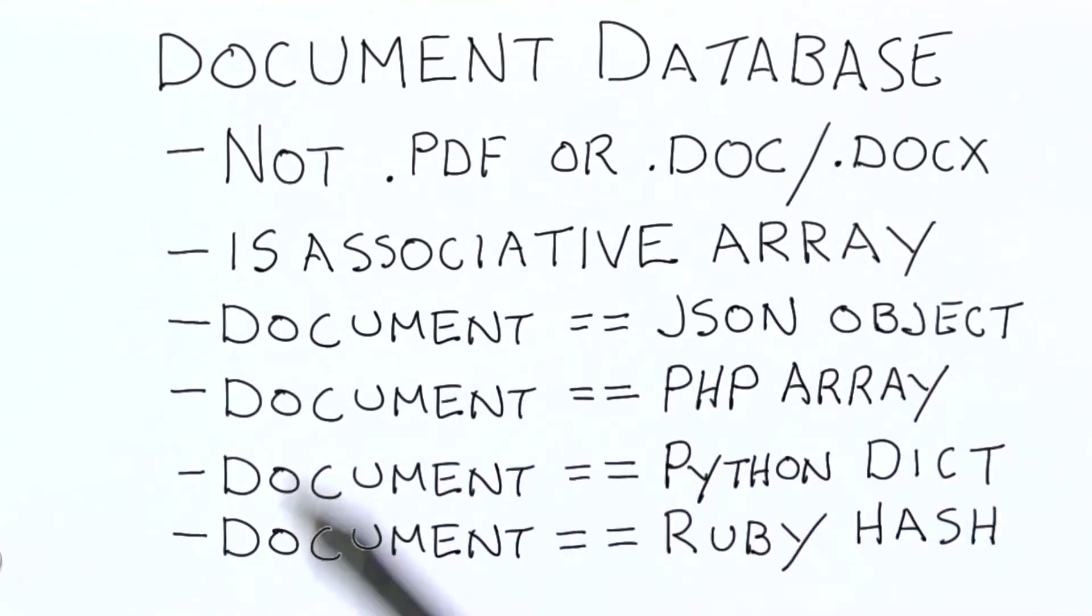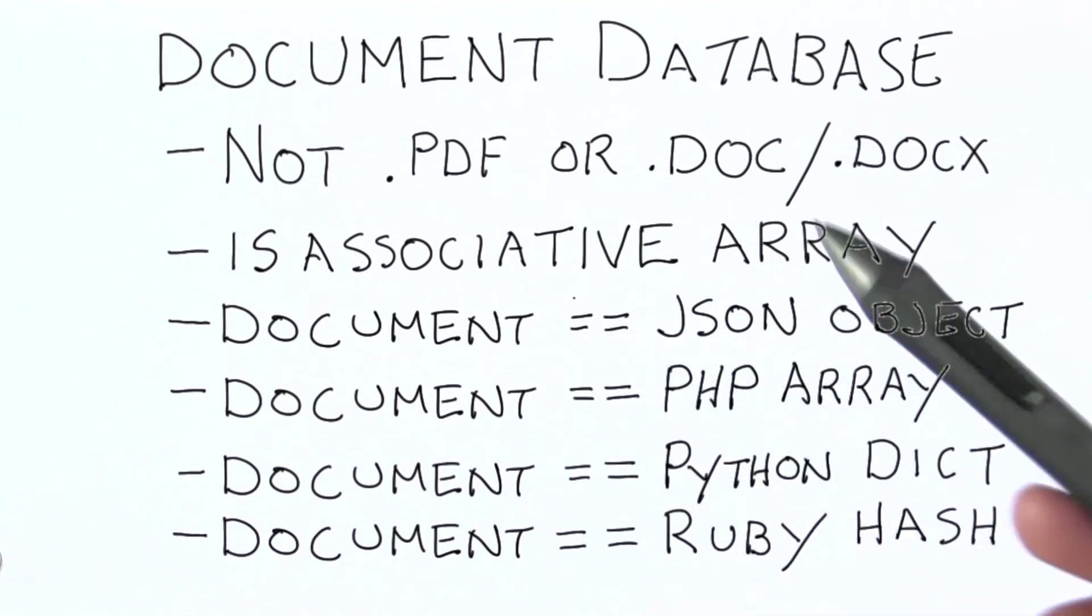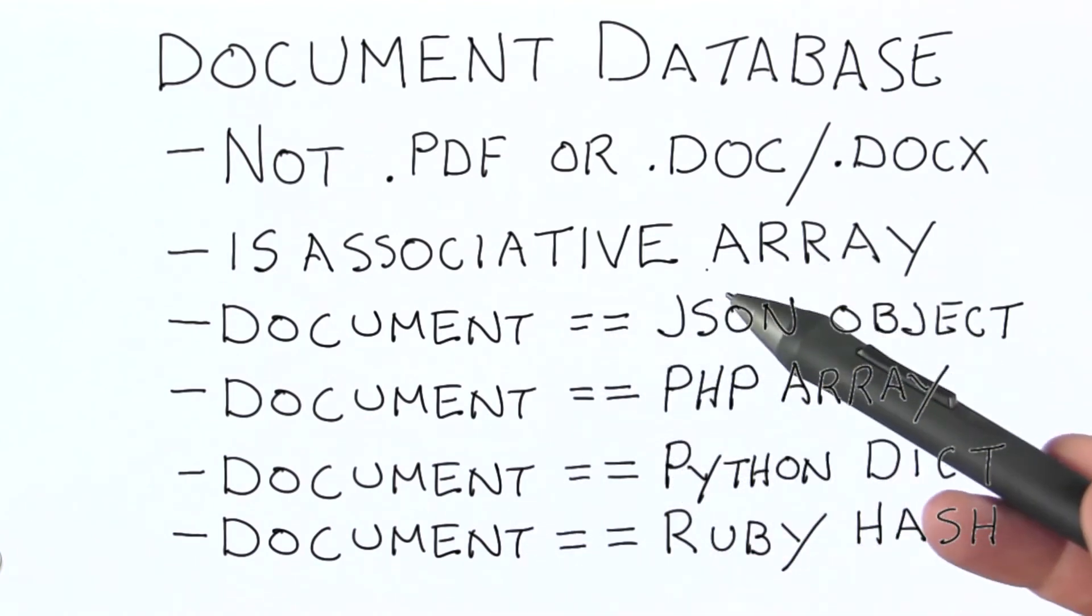This is the same type of structure that you see in a JSON object, or a PHP array, a Python dictionary or Ruby hash, and similar data structures in other programming languages. MongoDB allows us to store these types of hierarchical data structures directly in the database as individual items, or documents.